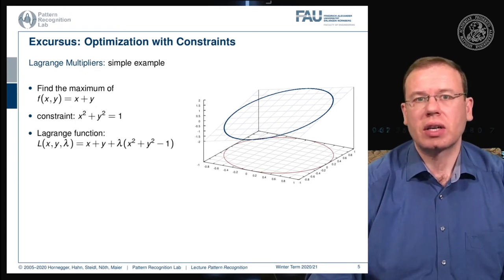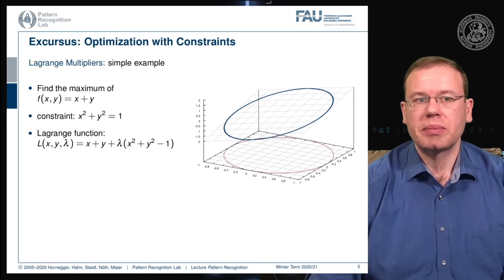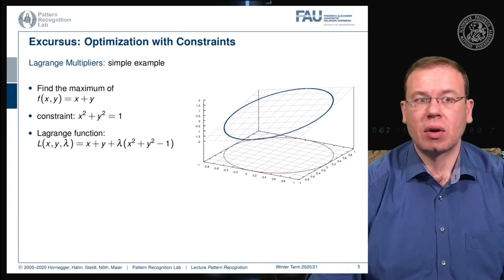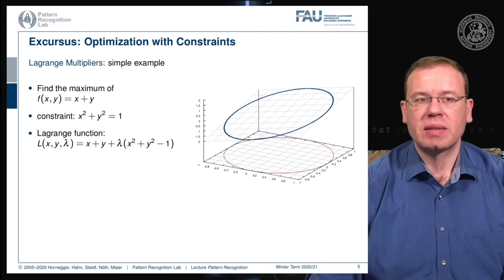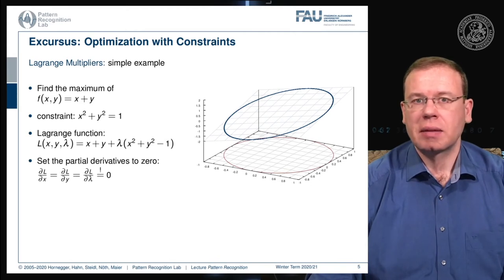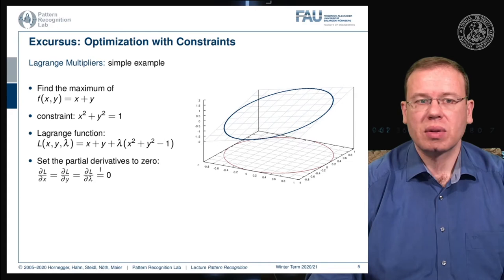One approach is Lagrange multipliers, which leads to the Lagrangian function. We take the original maximization problem and add the constraint with a multiplicative factor lambda, which is used to enforce the constraint. Our original function depended on x and y; the Lagrangian function now depends on x, y, and lambda. All solutions to the regularized problem must fulfill the condition that the partial derivative — the gradient with respect to all variables — equals zero.